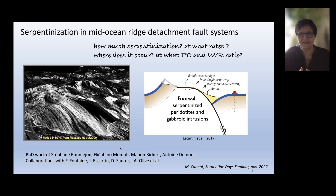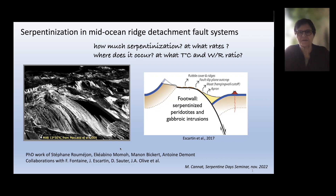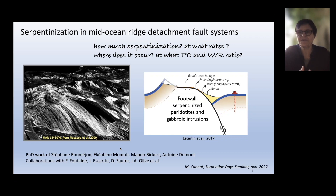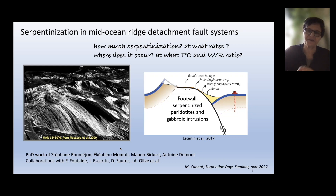This next part is an overview of current thinking on how serpentinization occurs at mid-ocean ridge detachment faults. The questions I'll address are: how much serpentinization is taking place, can we get an idea of the rates, and where and at what temperatures and water-rock ratios it occurs. This builds on a lot of previous work by PhD students and collaborators.